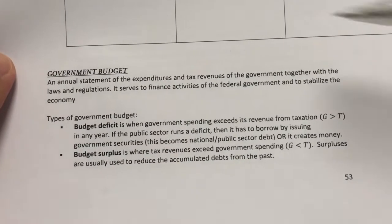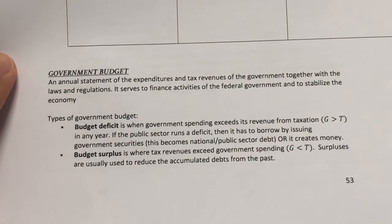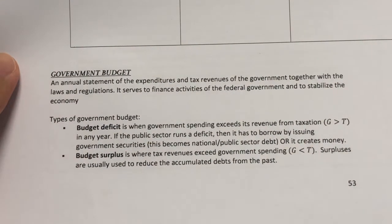So there are generally two types of government budget. One is called the budget deficit and the other one, budget surplus.